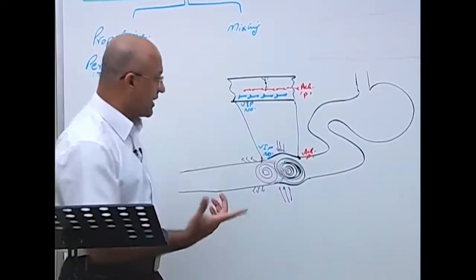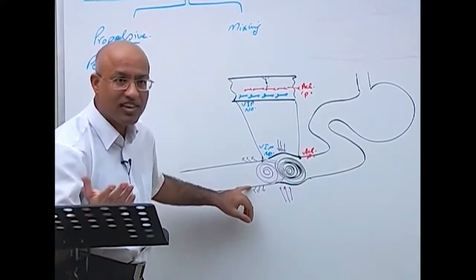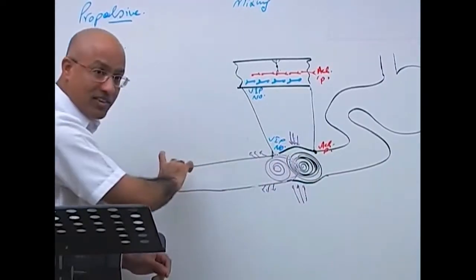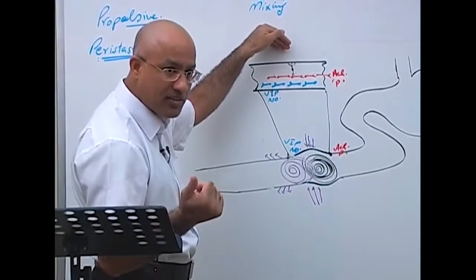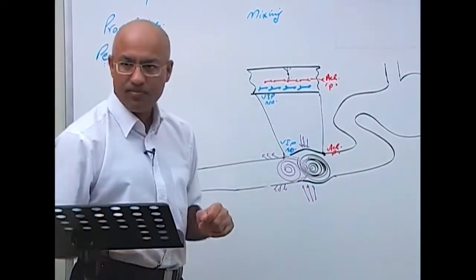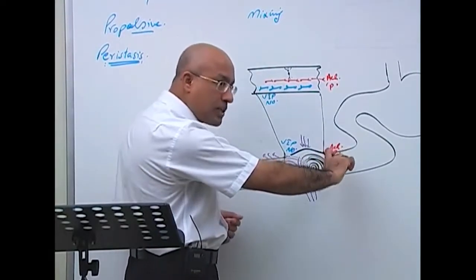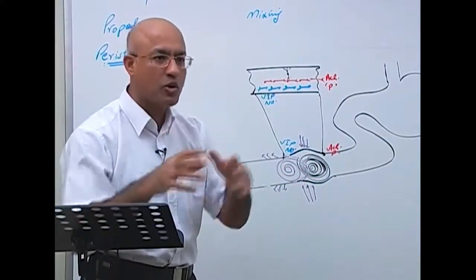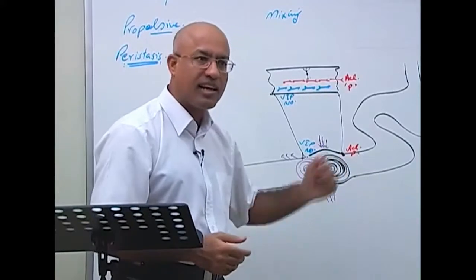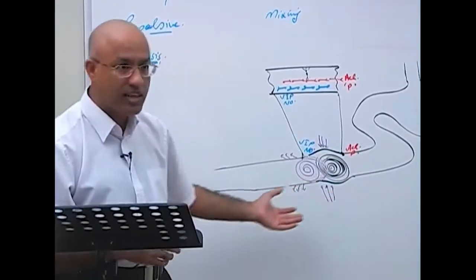The distance the constriction ring travels depends on the general excitability of the GI system at that moment. With strong parasympathetic stimulation, peristalsis moves a longer distance; without it, peristalsis is weaker. So even though peristalsis is produced within the myenteric reflex, whether it is weak or strong depends on factors including extrinsic neuronal control like parasympathetic or sympathetic stimulation. Parasympathetic stimulates GI activity, while the sympathetic nervous system inhibits it.